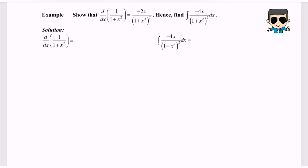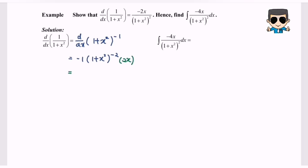In this question we have two parts. Part one, we differentiate the function. We modify the expression: d/dx of (1 plus x squared) to the power of negative one. Differentiating gives negative one times (1 plus x squared) to the power of negative two, multiplied by d/dx of (1 plus x squared), which is 2x. So d/dx of 1 over (1 plus x squared) equals negative 2x over (1 plus x squared) squared, which matches the given result.